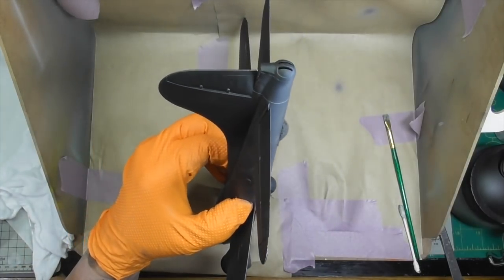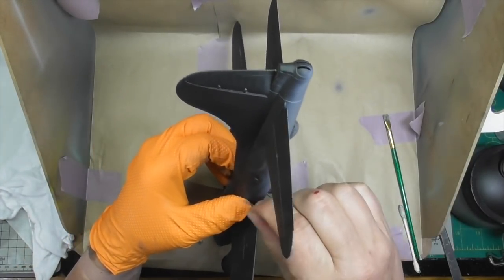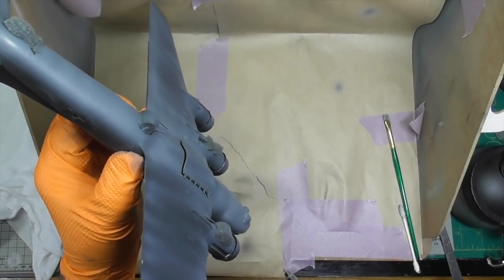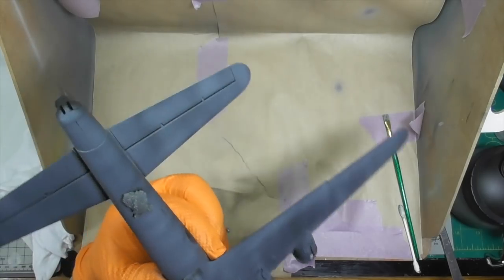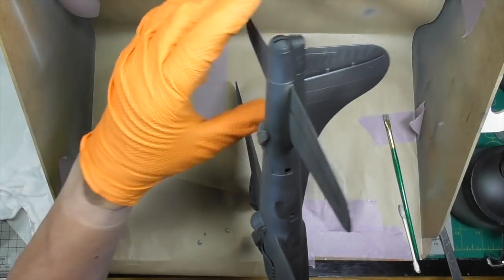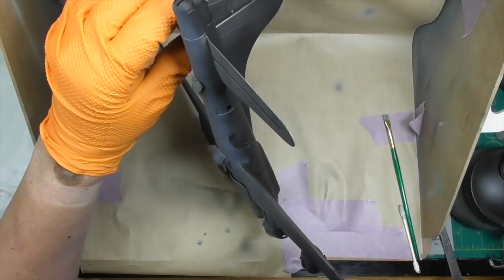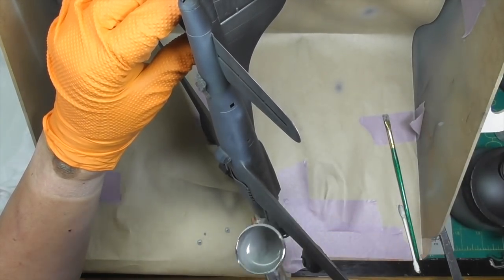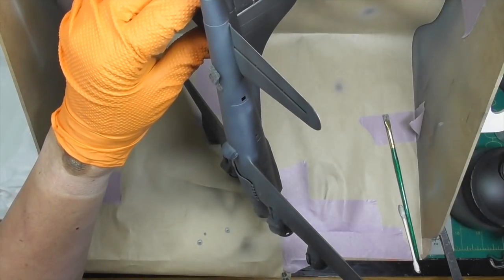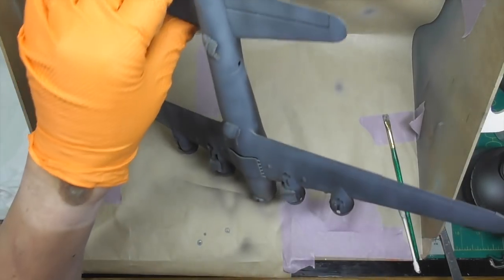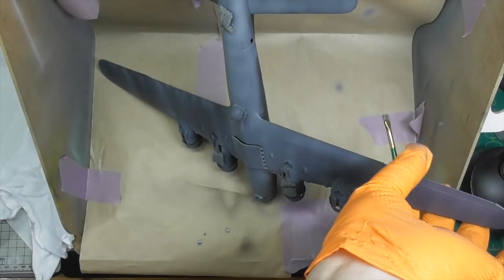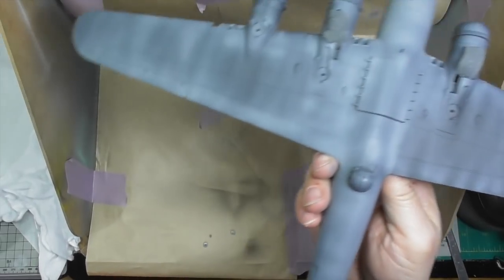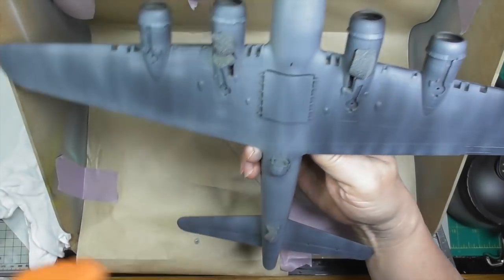Because this is the first coat, I don't need to have a perfect line. I'll mask this off when I go to spray the olive drab. So I'm going to make it close to where I want it, but I'm not going to worry about it being perfect.